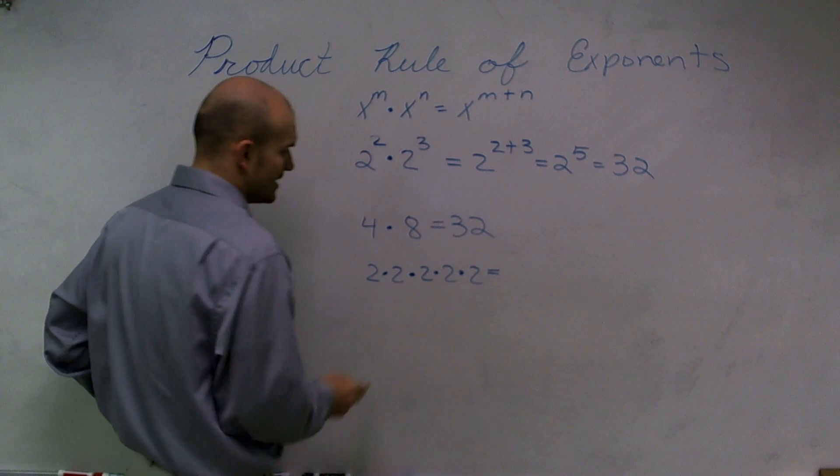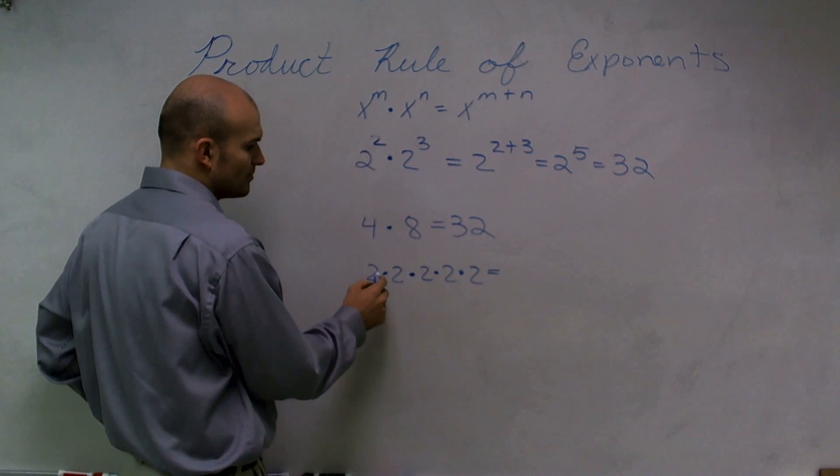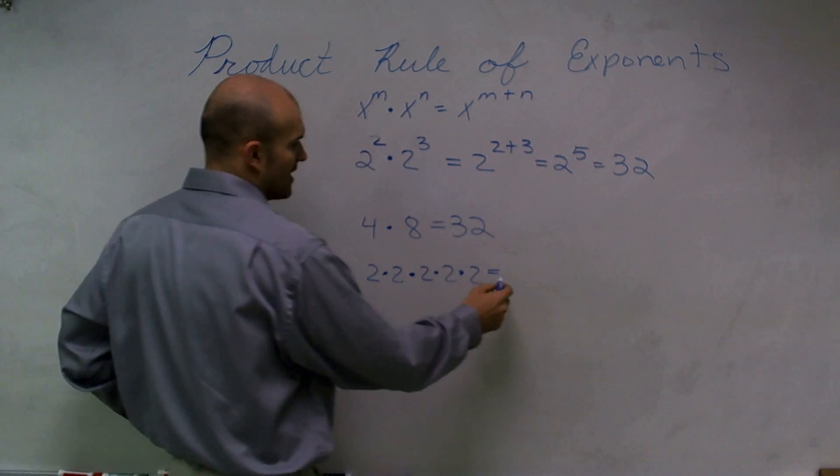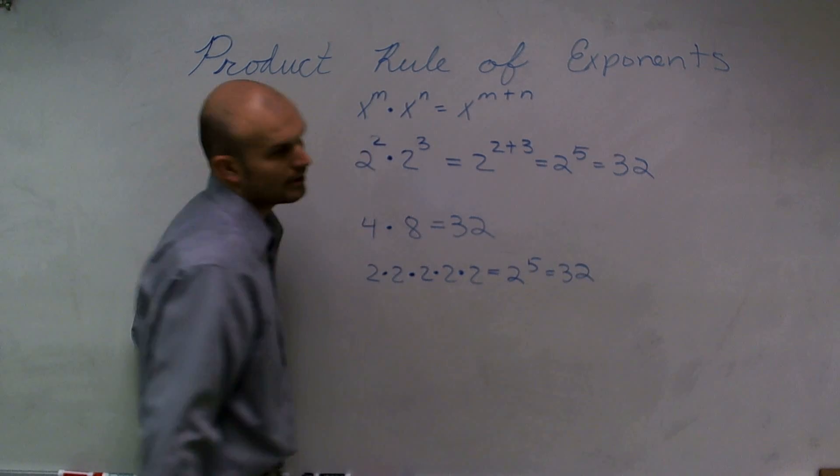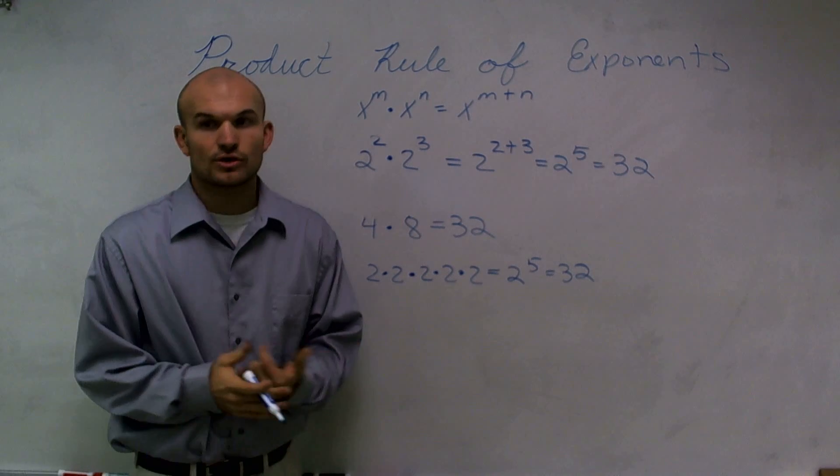Well, that's the same thing then as 2 to the what power? 2 plus 1, 2, 3, 4, 5. So that's why our product rules are always going to work for us.